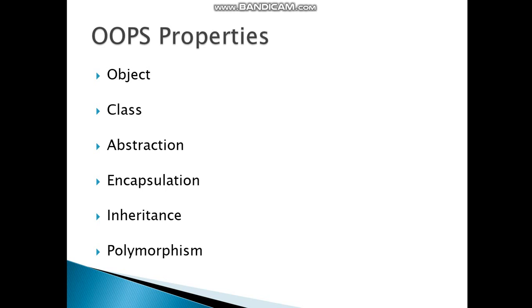We have so many properties of OOP and the main properties are: object, class, abstraction, encapsulation, inheritance, and polymorphism. We will discuss each one by one.